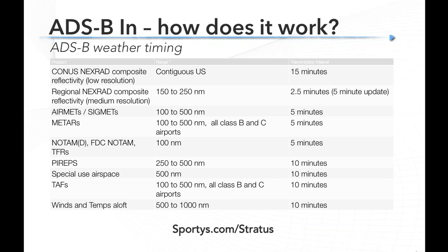How about timing? ADS-B weather is not real time, but it's pretty close to XM. Regional radar — within about 150 to 250 nautical miles — is transmitted every two and a half minutes with an actual picture updated every five minutes. That longer-range CONUS radar is updated every 15 minutes. METARs, NOTAMs, and similar products are five to ten minutes. One thing that trips people up: most airports only update their METARs every hour. So while the METAR feed is sent every five minutes over ADS-B, it can only send what it receives. If you see a 45-minute-old METAR, that's probably fine — you'll get a new one near the top of the hour.